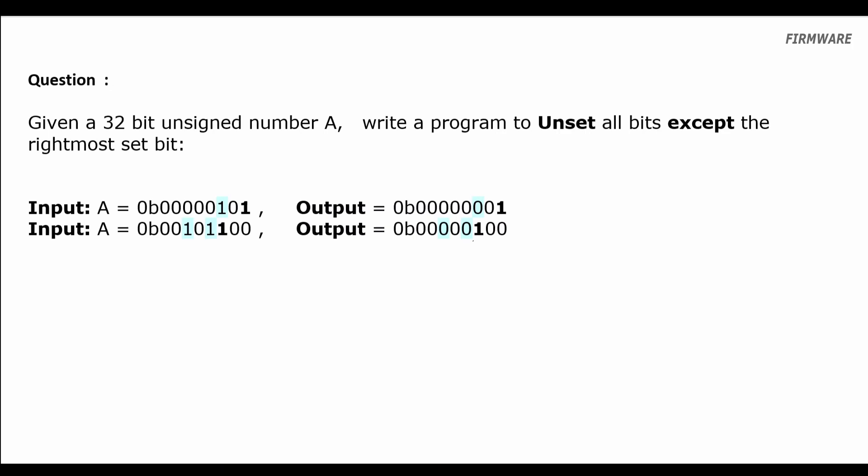Hey guys, in this video we're going to solve another important problem. What we need to do is, in a given number A, all the ones in the binary form of A we will make them zero except the rightmost one.